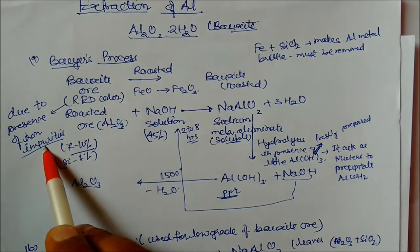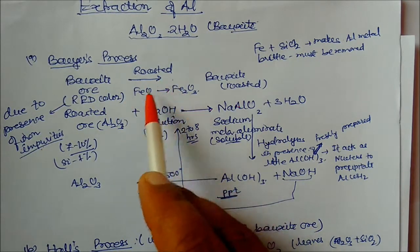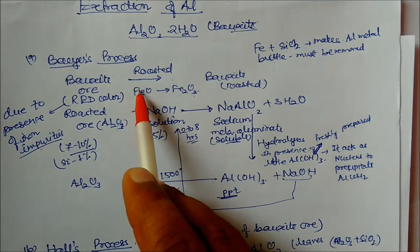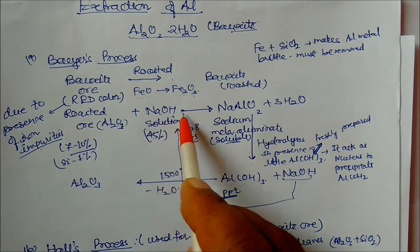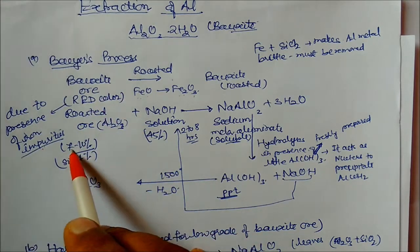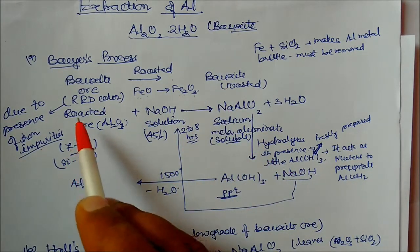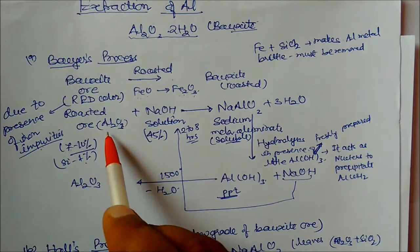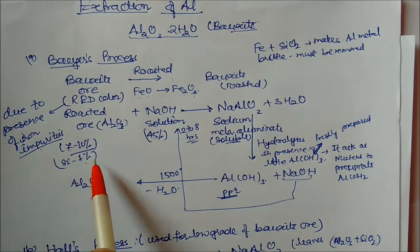If bauxite contains more iron impurities it becomes red in color (red bauxite). This is first roasted, converting FeO impurities to Fe2O3 (plus-two iron to plus-three iron). The roasted bauxite is then reacted with 45 percent NaOH solution. Iron present is about 7 to 10 percent and silica is about 1 percent. NaOH reacts with Al2O3 to form a soluble sodium meta-aluminate solution; iron and silica impurities remain behind.